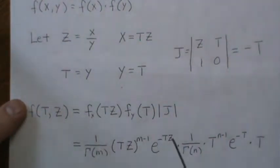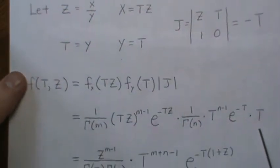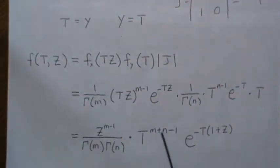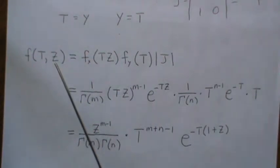So here is the gamma distribution for x. But we plug in tz. And then here it is for this and the absolute value of the Jacobian. So now this, and we collect like terms. And then this is the joint density of t and z. But we want z. So we need to integrate out t.